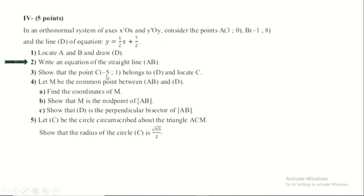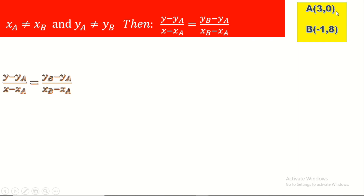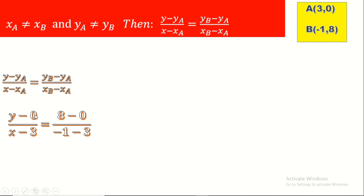Now write an equation of the straight line AB. We have several methods. The first is to use the formula: (y - yA)/(x - xA) = (yB - yA)/(xB - xA). Since we have the coordinates of A and B, we can replace them. We have yA = 0, xA = 3, yB = 8, xB = -1.